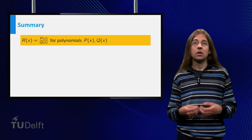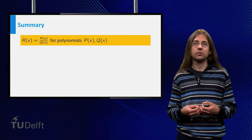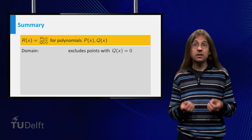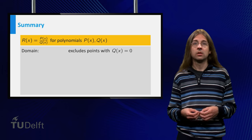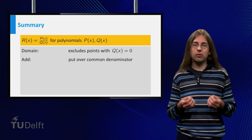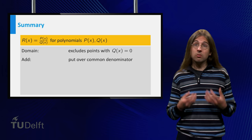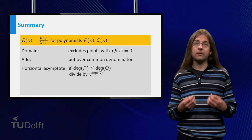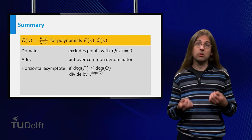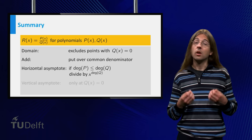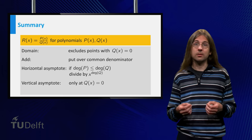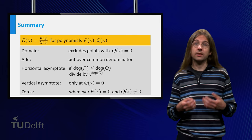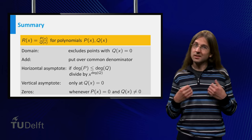To summarize: Rational functions are the quotient of two polynomials. A rational function can only be defined for the x values for which the denominator is unequal to zero. You add rational functions by making the denominators equal. The graph of a rational function often has asymptotes. Horizontal asymptotes can be found by dividing both numerator and denominator by the highest power of x occurring in the denominator. Vertical asymptotes can be found by looking at the zeros of the denominator. The zeros of the rational function are found at the zeros of the numerator. Good luck with the exercises!